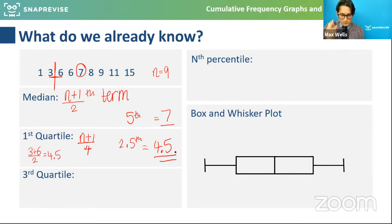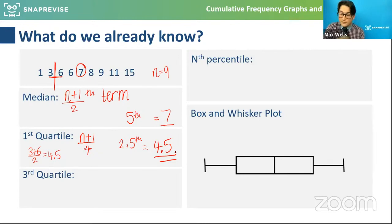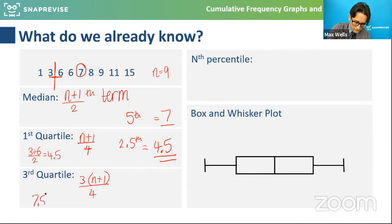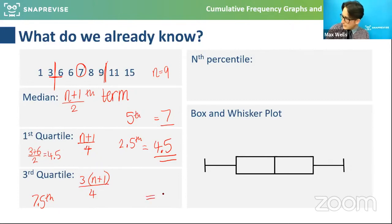The middle is quite clearly the fifth thing because there's four on each side, but the lower quartile would be halfway between the second and third thing - the 2.5 position. We average the two values: three plus six divided by two equals 4.5. Similarly the upper quartile is three quarters of the way through - the 7.5 term - between nine and eleven, giving an upper quartile of 10.